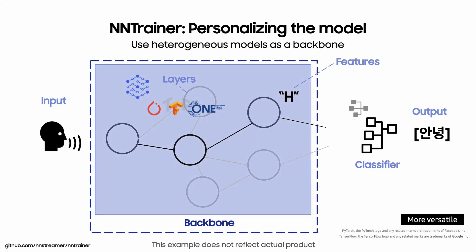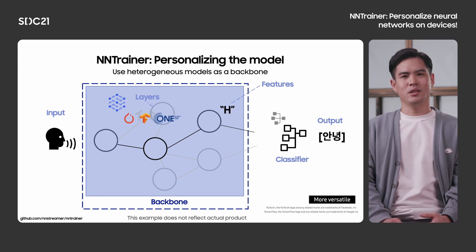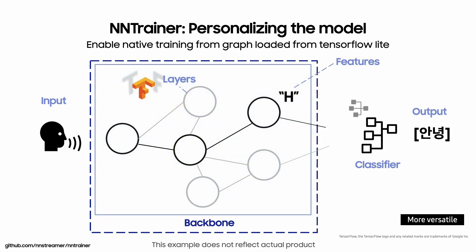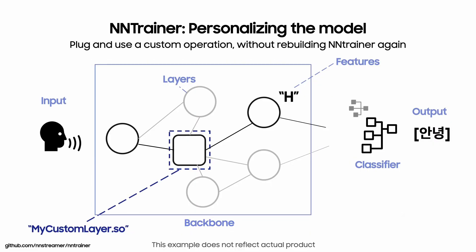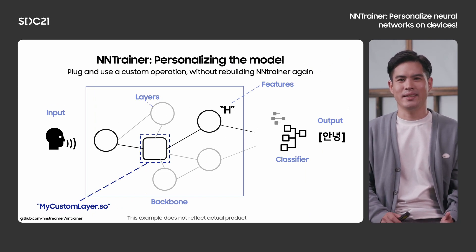Another cool feature is that we provide a way to reuse existing backbones with conventional frameworks, in case you're not interested in retraining the backbone. We support other frameworks like PyTorch or TensorFlow Lite to be plugged in and used instead. Moreover, for some operations, we directly support loading a graph from TFLite files so that you can retrain the model without further boilerplate work of constructing NN-Trainer layers. If you need an operation we don't support, we provide shared-object-based plugins so you can build your own, build it as a separate SO, and plug it in without rebuilding the whole NN-Trainer.